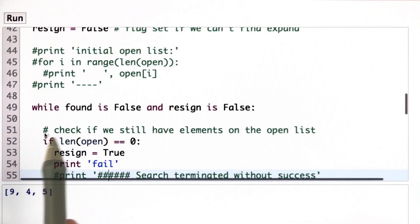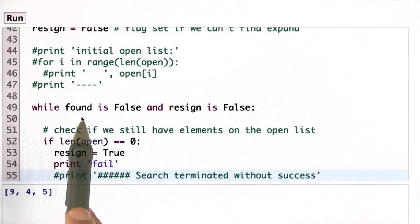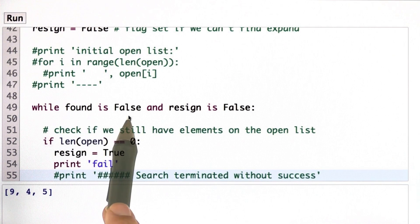But here's the code. I repeat the following while I haven't found a path to the goal and I haven't proved that the problem is unsolvable. So both found and resign are false.